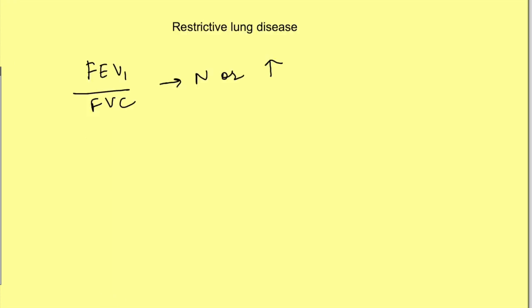To diagnose restrictive lung disease, we need to look at the individual value of FVC and fundamentally at static lung volumes and capacities, where we'll see decreased vital capacity, decreased residual volume, and decreased functional residual capacity.